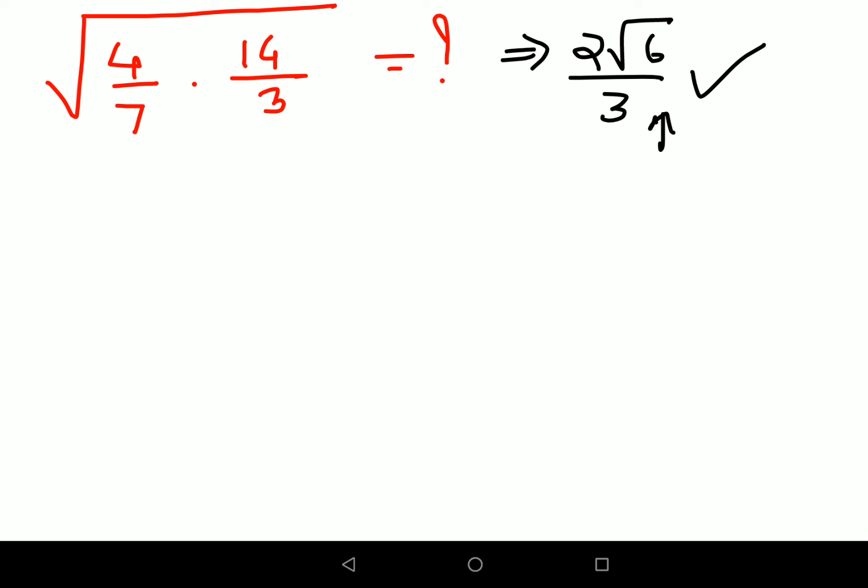Now we'll keep things very simple. This 4 we'll write as 2 into 2. 7 is a prime so I can't do anything with this. 14 can be written as 2 into 7, and 3 is a prime so I can't do anything with this.